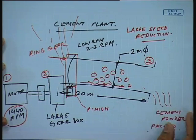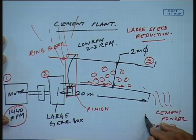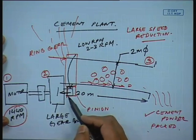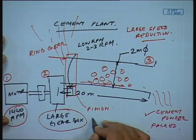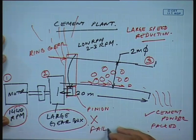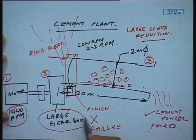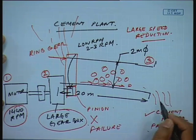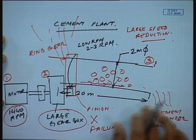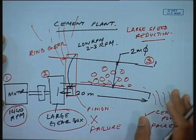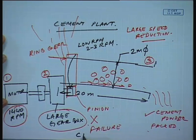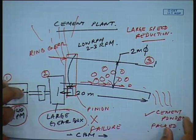If the gearbox fails for some reason — and this is a critical component — the mill is not going to rotate and there will be no cement. This is going to critically affect the process, output, and productivity of the plant. So I have to be very careful about the gearbox's maintenance and CBM must be done on this gearbox to evaluate it around the clock.